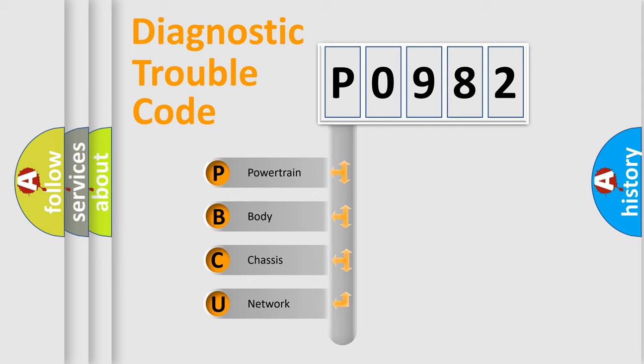We divide the electric system of automobile into four basic units: powertrain, body, chassis, and network. This distribution is defined in the first character code.